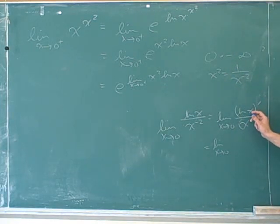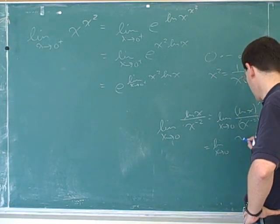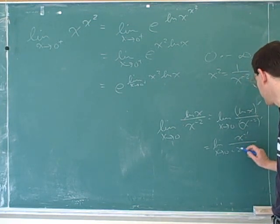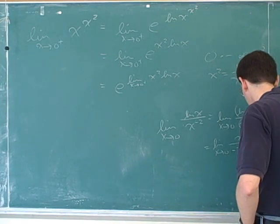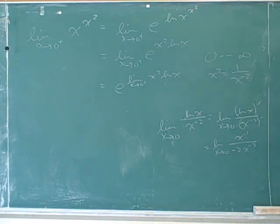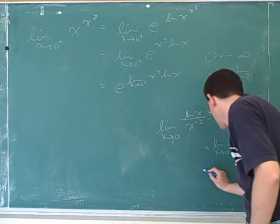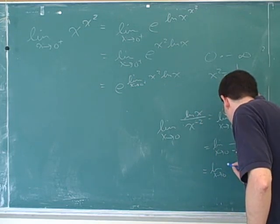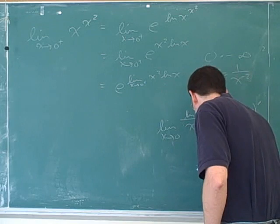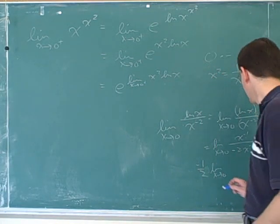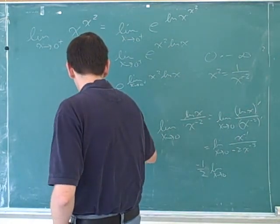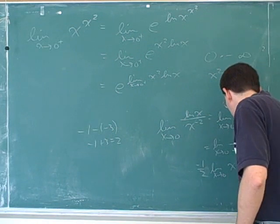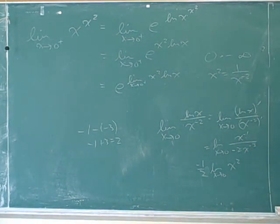Well, the derivative of a natural log is 1 over x, or x to the negative 1. And the derivative down here is negative 2 x to the negative 3. So, that's... We can take the negative 1 half out of the limit. And then we have negative 1 minus negative 3 in the exponents. That's negative 1 plus 3, or 2. So, it looks to me like this simplifies to x squared. Okay?